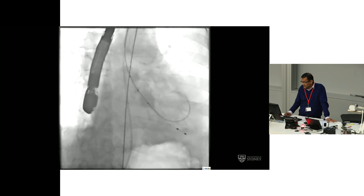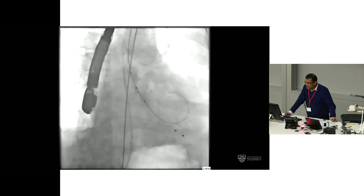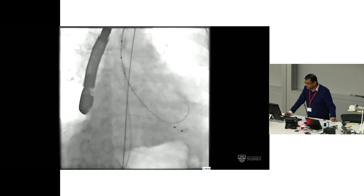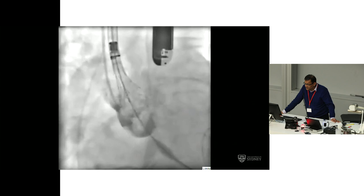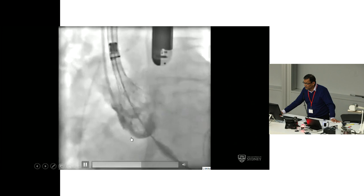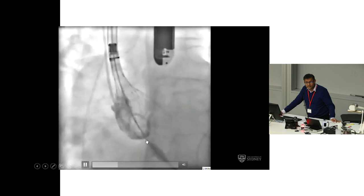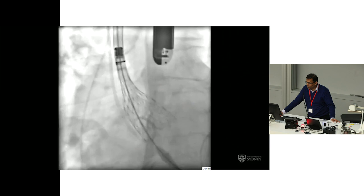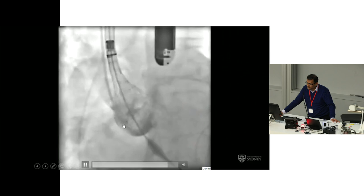In this particular case, they went ahead and did a valvuloplasty — they didn't do an aortogram at the time — and had determined they were going to do a supra-annular placement. As was demonstrated in the last case, there's a pigtail catheter in the distal part of the coronary cusp. The tip of the valve leaflet is extremely high for a conventional tricuspid implant, and they're aiming for an implant depth of about zero or even one, so the valve will hold at a supra-annular level.